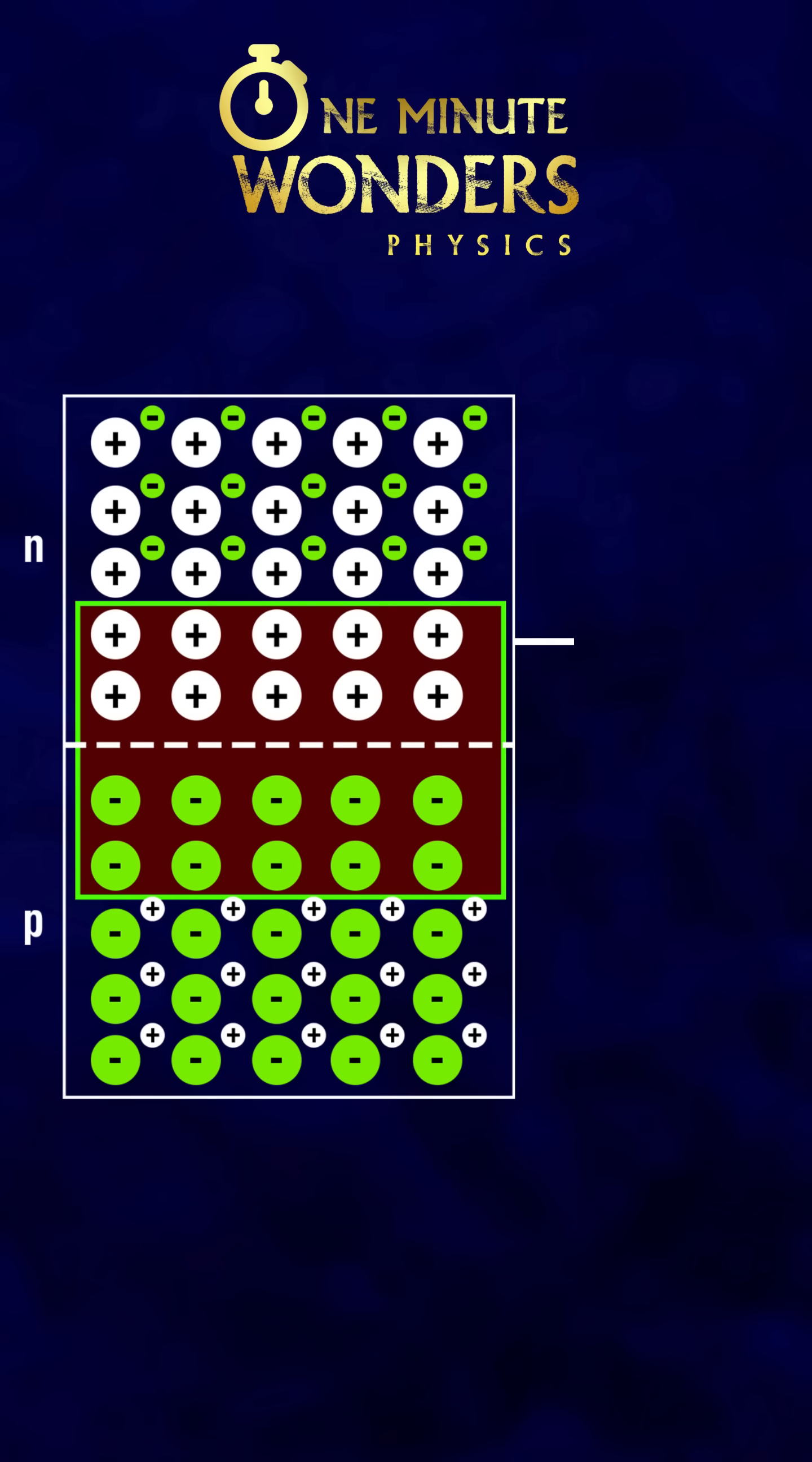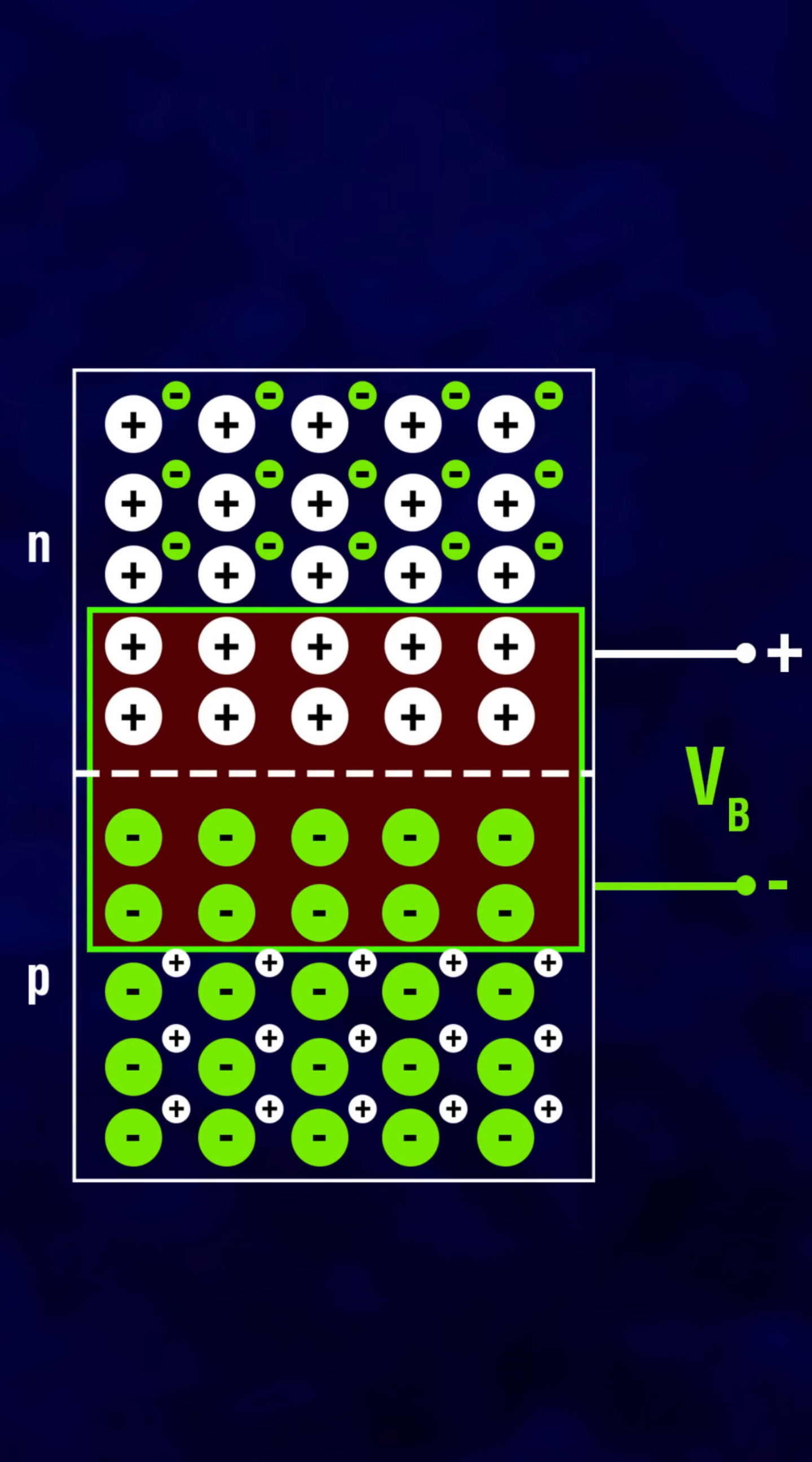At the depletion region, the N region is at higher potential and the P region is at lower potential. This potential difference is called barrier potential.